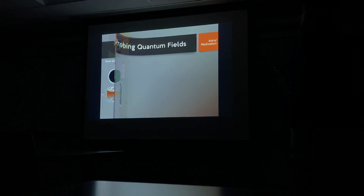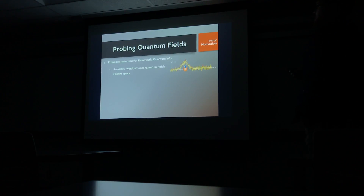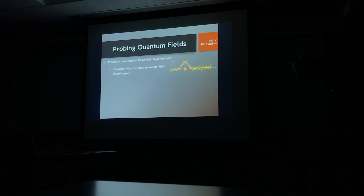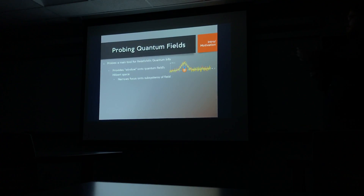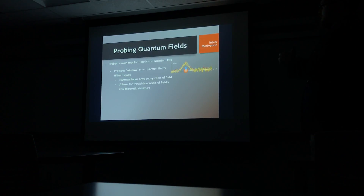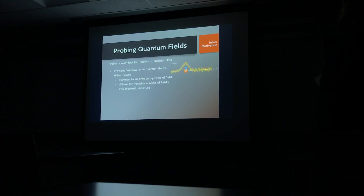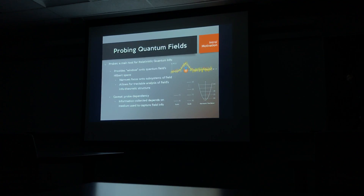In relativistic quantum information, one of the main tools is probes. We probe the quantum field with a first quantized system — say a qubit or a harmonic oscillator — and that provides a window onto the quantum field's Hilbert space. It narrows our focus onto a subsystem of the field, because the Hilbert space of the field is so large it's kind of unwieldy.